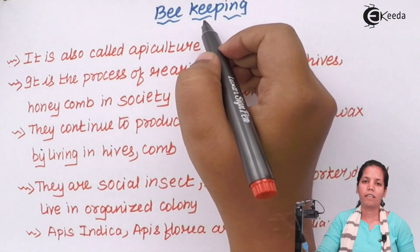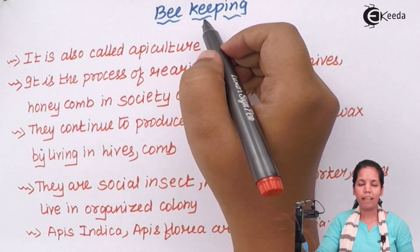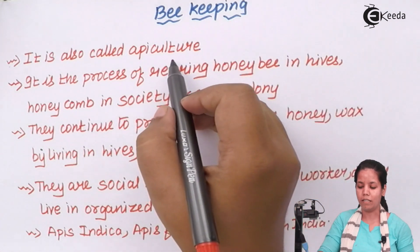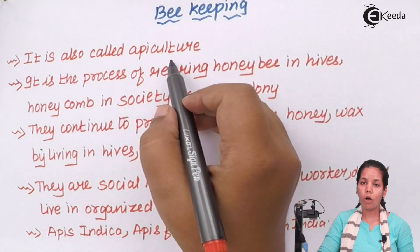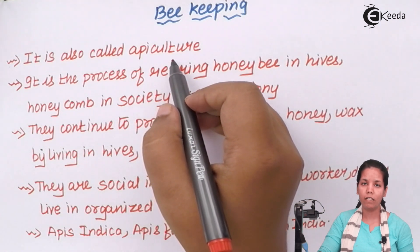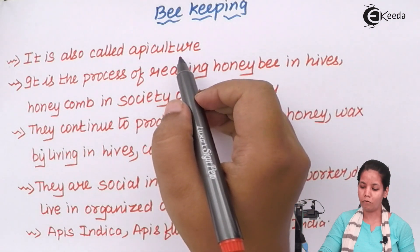Beekeeping is simply the rearing of honeybees, also called apiculture. Farmers rear honeybees for commercial purposes, and even industries rear honeybees. Now, what's the commercial aspect of rearing honeybees?